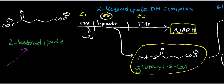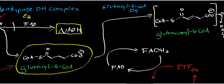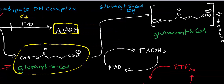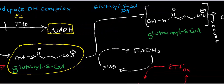They all have the three different subunits — the E1, the E2, the E3. We saw that enzyme 2, which is basically our dihydrolipoyl transacetylase, gives us glutaryl-S-CoA. Now what we're going to do is look at the catabolic pathway for glutaryl-S-CoA.